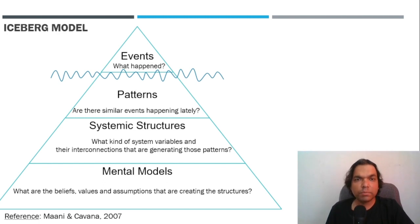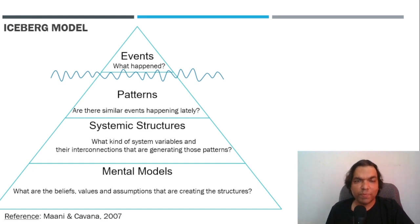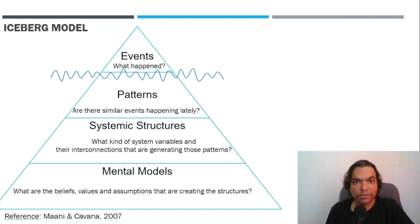The way to apply the Iceberg model is this: look at the individual events happening, and see if there is a pattern to them. Understand what kind of systemic structures are giving rise to those patterns, and make a note of all the mental models that give rise to those structures. At the event level, you ask the question: what happened?